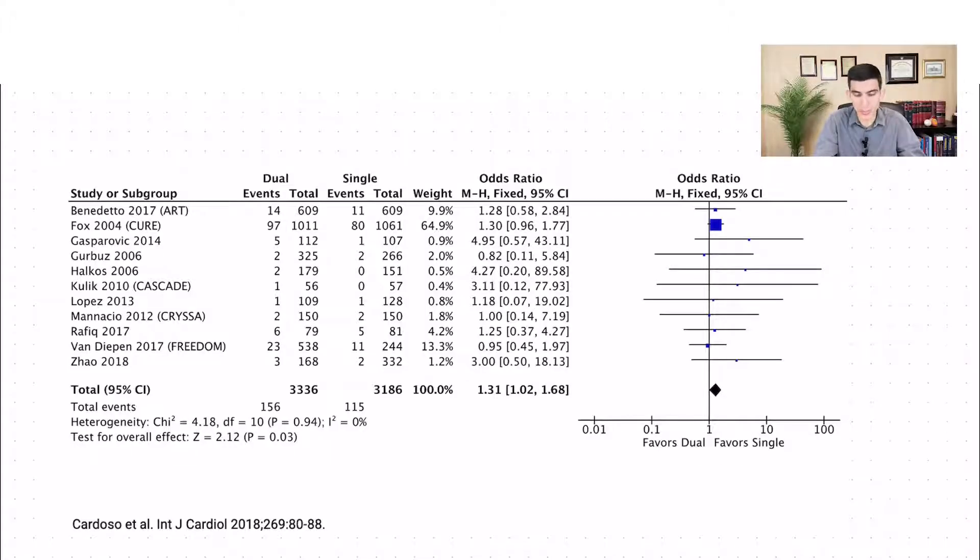Over here, we have the summary statistics. In this case, the odds ratio for each individual study and then for the meta-analysis itself. We also have here a graphical representation on the right,